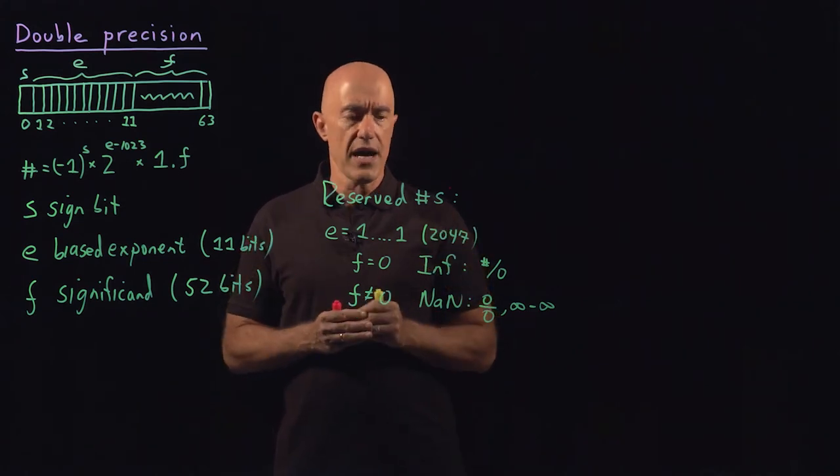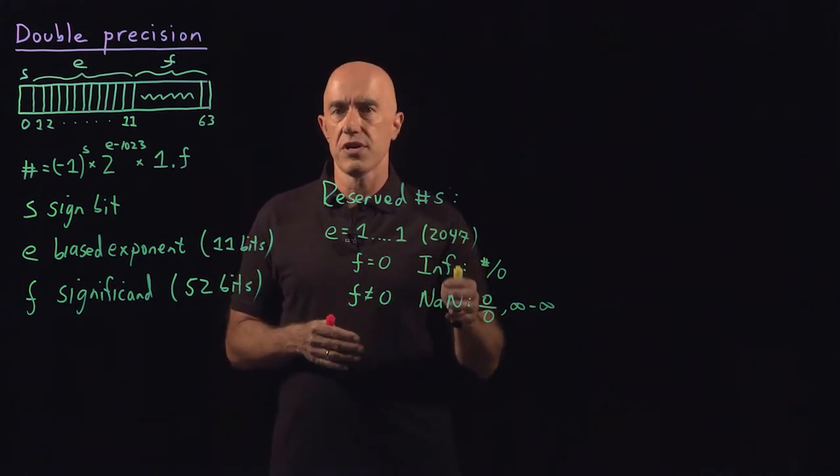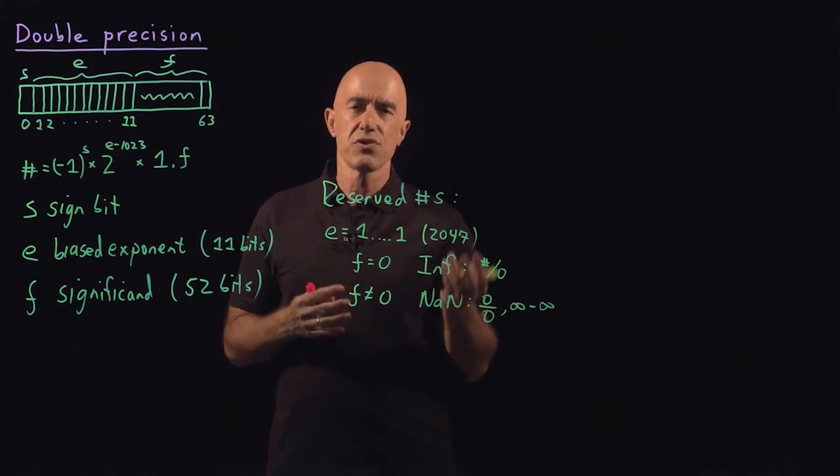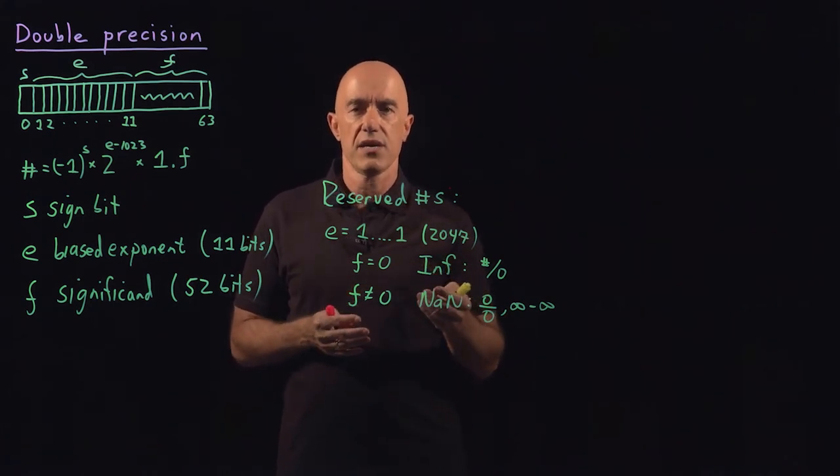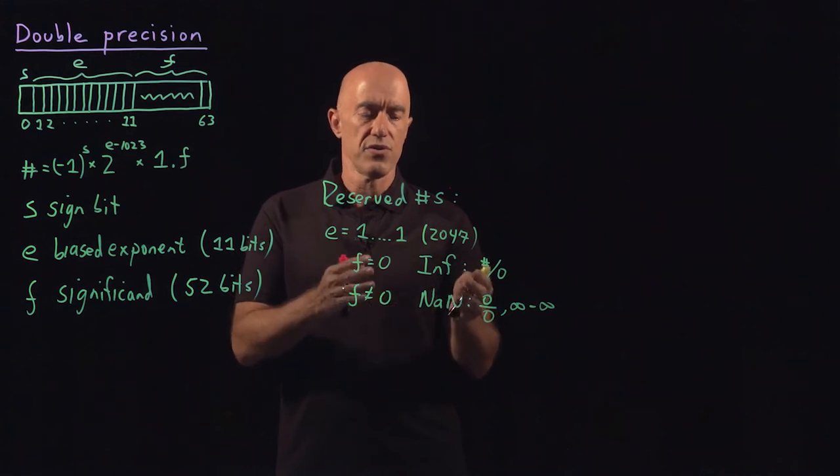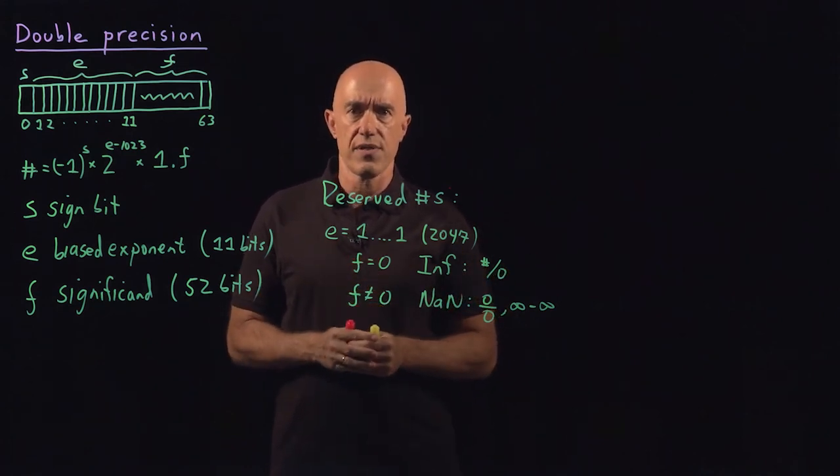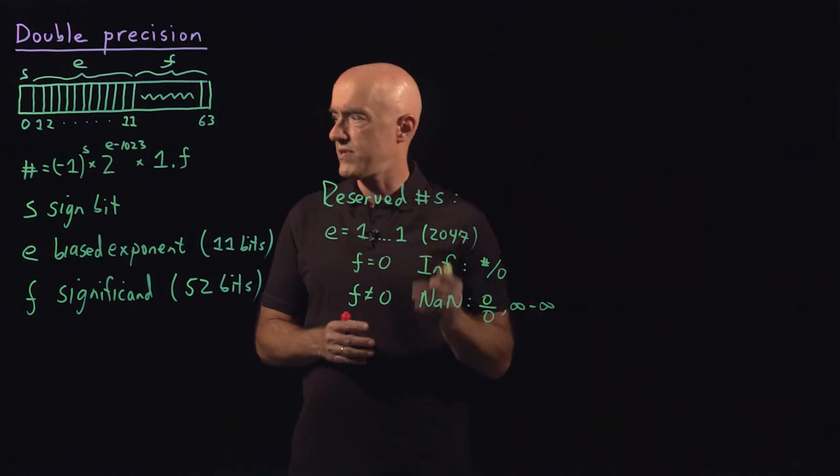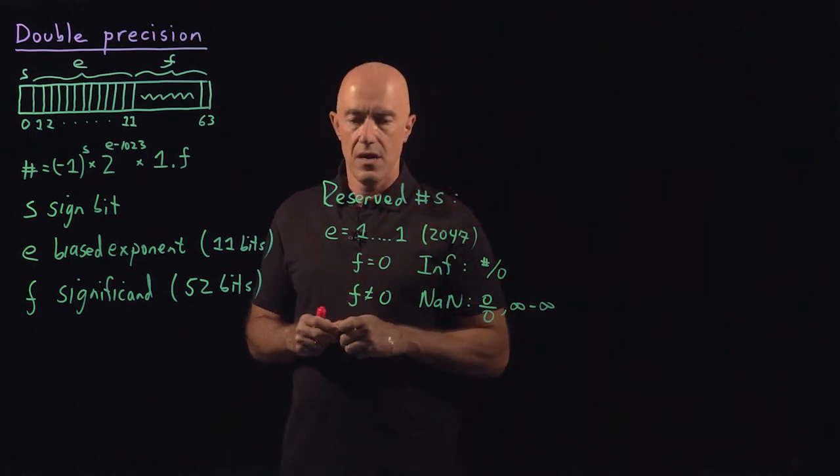Typically, in a calculation, if you got an infinity or you got a not a number, it usually means you have a bug in your program, or else you have an unstable sort of algorithm. So it usually represents a problem.